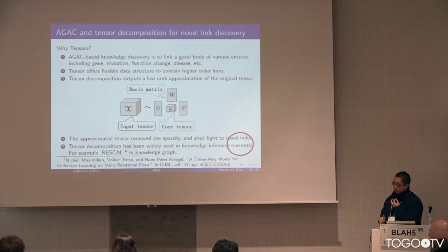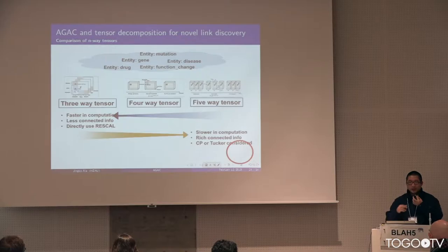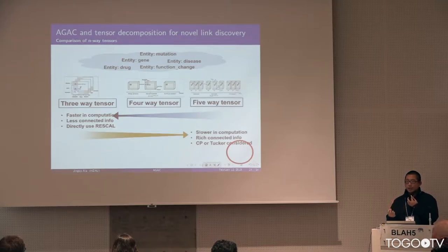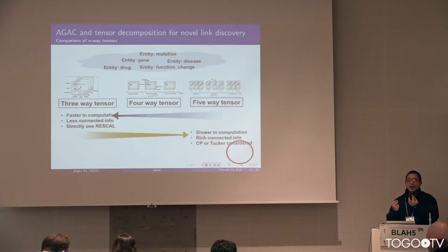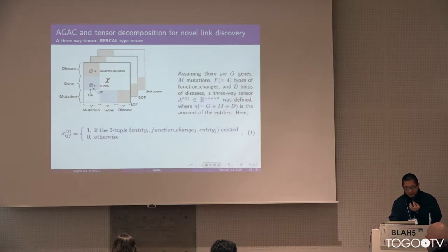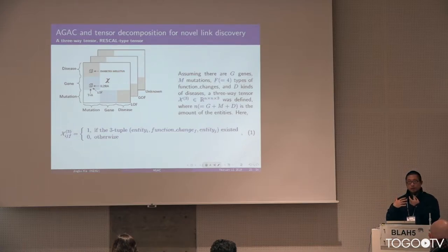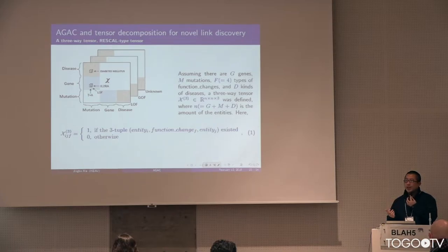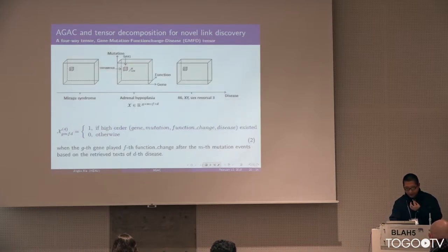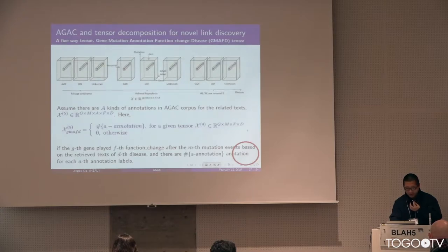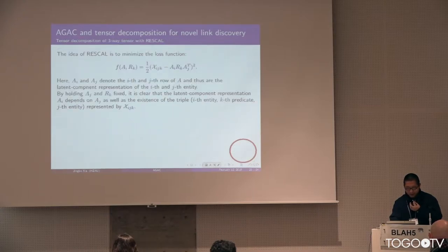Three points. The first point is that we can use something like tensors to contain those links. We call it higher-order links. And by doing the tensor decomposition, we can find the novel links in the decomposed new tensors. This first point, we tried something and got this paper published recently.